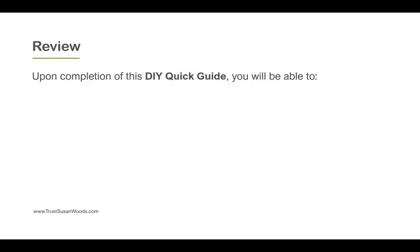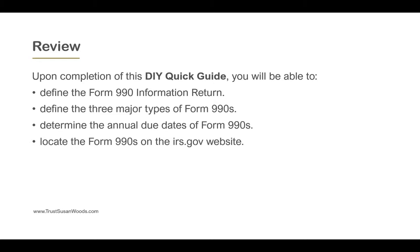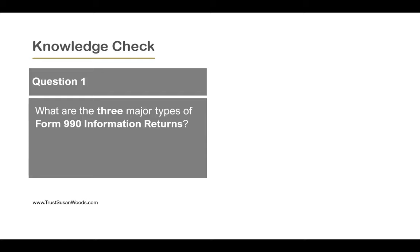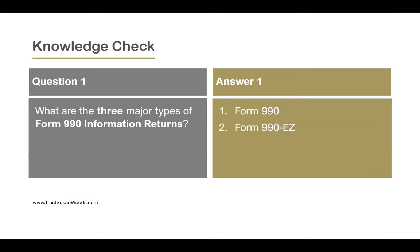Here's a review of what we've learned. Upon completion of this DIY quick guide, you'll be able to define the Form 990 information return, define the three major types of Form 990s, determine the annual due dates of the Form 990s, and locate the Form 990s on the irs.gov website. Let's see how well we do on the knowledge check. Question one: What are the three major types of Form 990 information returns? Answer: Form 990, Form 990-EZ, and Form 990-N e-postcard.